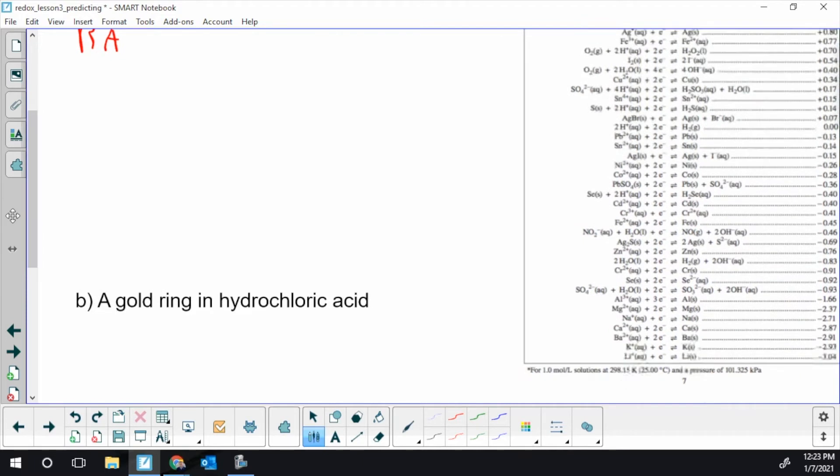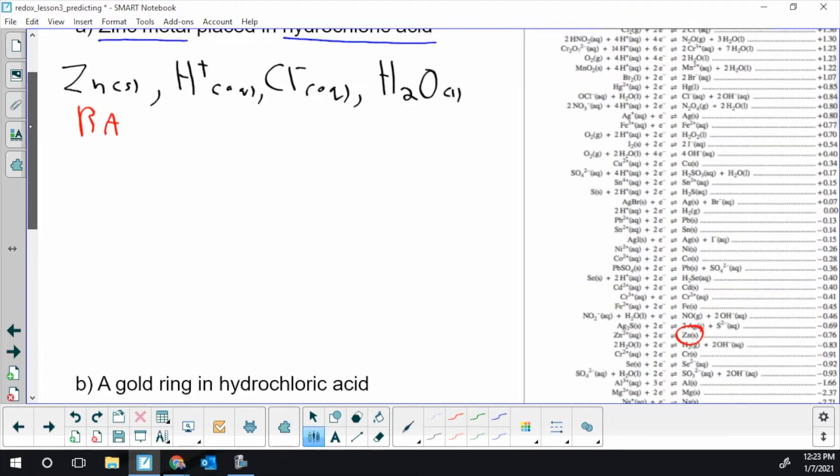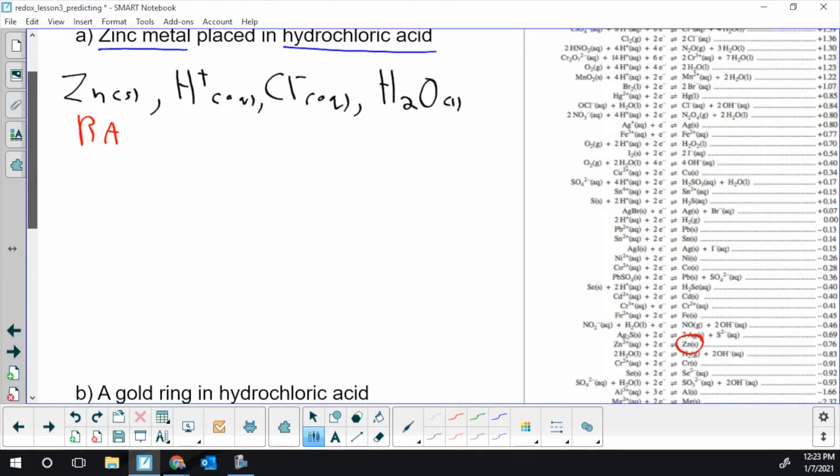So in the RA table, zinc is right there. It's a fairly good reducing agent. H plus is all over the place. There is H plus all by itself. That's an OA. And then I have to watch out for pairings. Is H plus paired with anything else, with chloride or water?